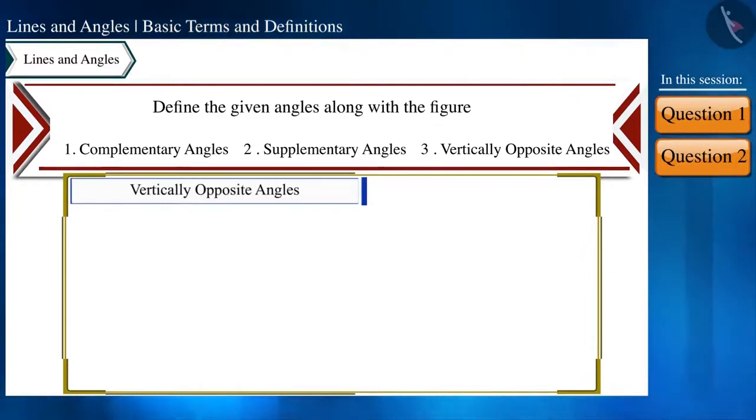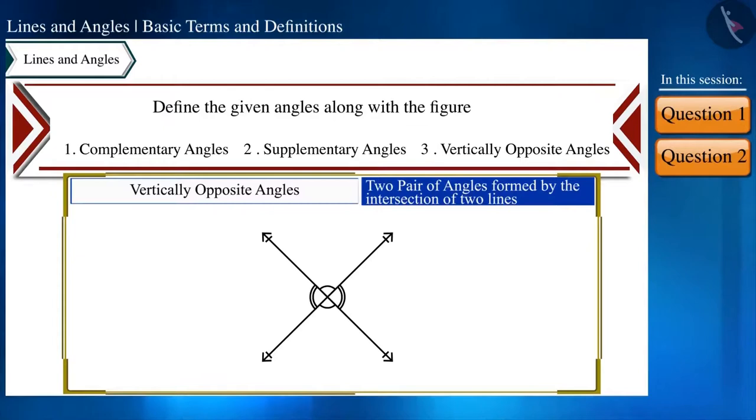Now, let's see the definition of vertically opposite angles. When two lines intersect each other, then the vertically opposite angles are formed.